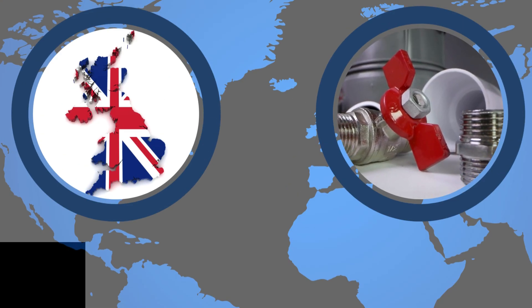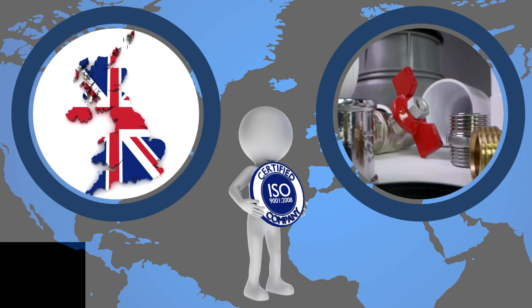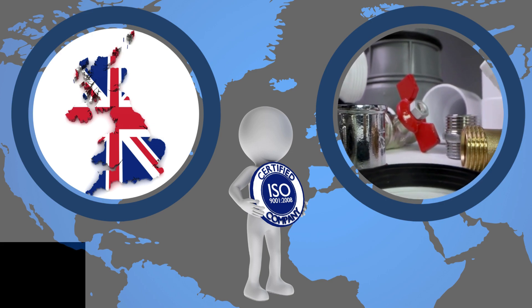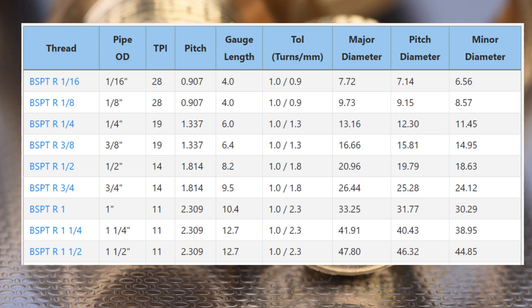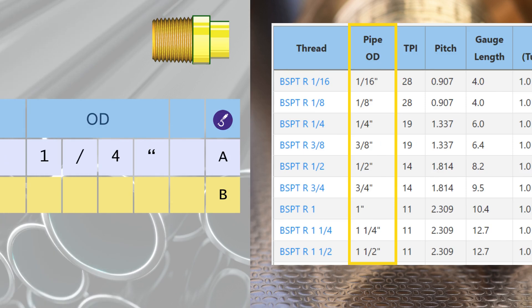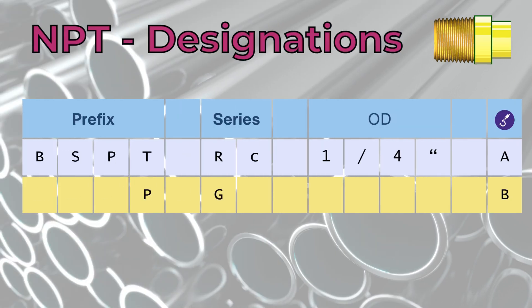BSP is a British standard for pipe threads defined by ISO 7 and ISO 228. It is the most commonly used pipe thread system outside the USA. In North America, the more popular standard is NPT. Although it is a British standard and the nominal pipe sizes are in inches, the dimensions are defined in millimeters.